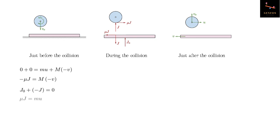If we apply the linear impulse-momentum theorem to the ball in the horizontal direction, we get mu·J equals m·u, where mu·J is the horizontal impulse and m·u is the final linear momentum in the horizontal direction of the ball, with initial being zero. In the vertical direction, we get J equals final momentum m·v0 minus initial momentum m into minus v0. I have taken upwards positive. Finally, applying the angular impulse-momentum theorem about the center of the ball, we get mu·J·r anticlockwise equals final angular momentum zero (because it stops rotating) minus (2/5)·m·r²·omega0 clockwise.